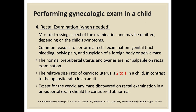Only when needed, we can also perform a rectal exam. The most distressing aspect of the examination may be omitted depending on the child's symptoms. Common reasons to perform a rectal exam include genital tract bleeding, pelvic pain, and suspicion of a foreign body or pelvic mass. The normal pre-pubertal uterus and ovaries are non-palpable on rectal exam. The relative size ratio of cervix to uterus is 2:1 in the child, in contrast to 1:2 in the adult. Any mass discovered on rectal exam in a pre-pubertal child, except for the cervix, should be considered abnormal.